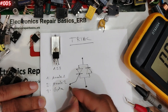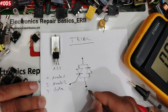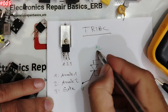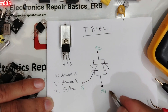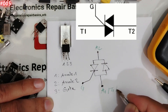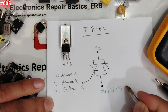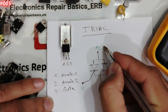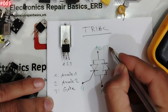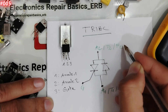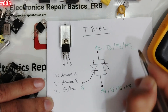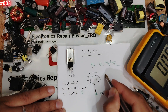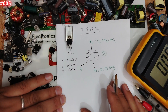Anode one can also be labeled T1, M1, or MT1. Anode two can also be labeled A2, T2, M2, or MT2. This is the first symbol you'll commonly find for the triac, but there is also another symbol.